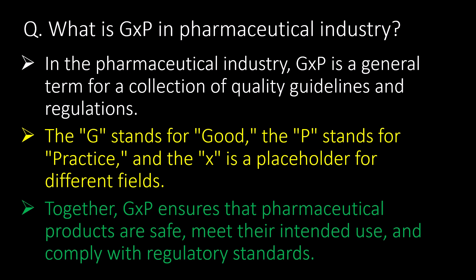Welcome. We will start with some basic questions and then go in detail. First question: what is GXP in the pharmaceutical industry? In the pharmaceutical industry, GXP is a general term for a collection of quality guidelines and regulations. The G stands for good, P stands for practice, and the X is a placeholder for different fields. Together, GXP ensures that pharmaceutical products are safe, meet their intended use, and comply with regulatory standards.